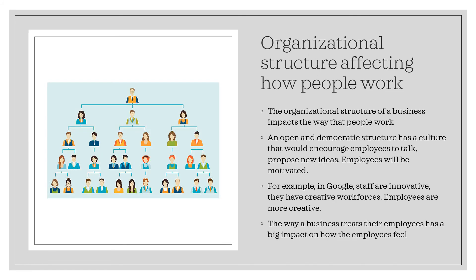Organizational structure affects how people work. An open and democratic structure encourages employees to talk and propose new ideas, and employees will be more motivated. Whereas an autocratic structure means less communication, and employees won't feel like opening up — they may be less motivated. An example of a democratic structure would be Google, where staff are innovative and have creative workforces. The way a business treats their employees has a big impact on how employees feel.